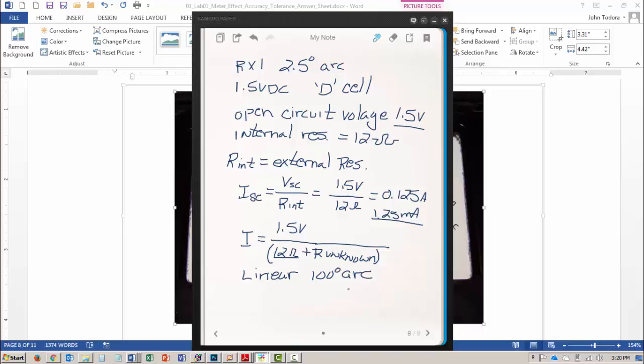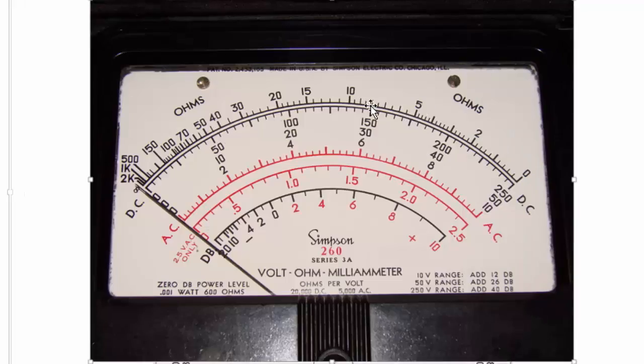So since I have 125 milliamps for the full scale, I can find out how much current it takes to deflect the meter by one degree. And that's really simple to do by saying 125 milliamps divided by 100 degrees will give me 1.25 milliamps per degree. So for every degree of movement on this meter, I will be generating 1.25 milliamps.